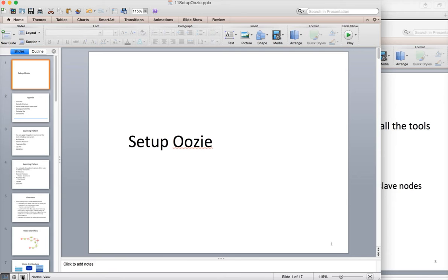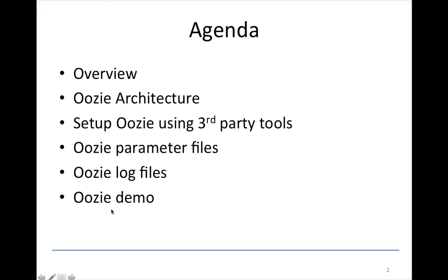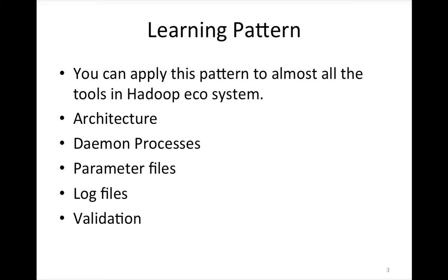We have also looked into HBase, which is the low latency database on top of Hadoop. We have implemented many tools using the wizard provided by Ambari. As part of that effort, we will see another product which is part of the core Hadoop ecosystem: Oozie. The agenda includes an overview of Oozie, understanding the architecture, setting up Oozie using Ambari, and reviewing Oozie parameter files, log files, and a demo.